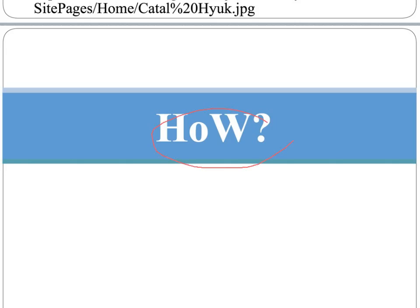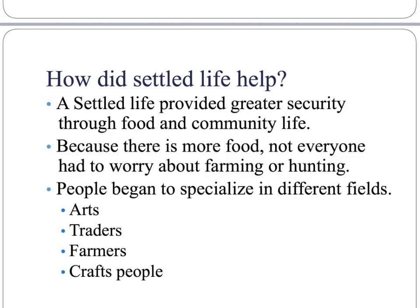How did settlement help? Settlement provided a greater sense of security through food and community life. Because there was more food, not everyone had to worry about farming or hunting. People began to specialize in different fields — you had people in the arts, traders, farmers, and craftspeople. So settlement brought greater security, more food, and allowed people to specialize.